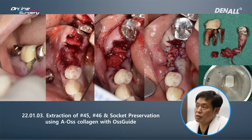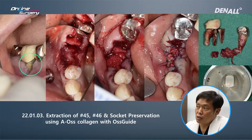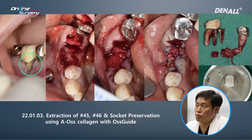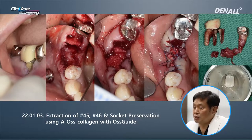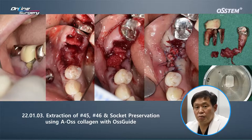In the area where the teeth are, the root is actually exposed. There was a root fracture leading to complete buccal wall destruction. AOS, a collagen membrane from Ostem, was used to do socket preservation.